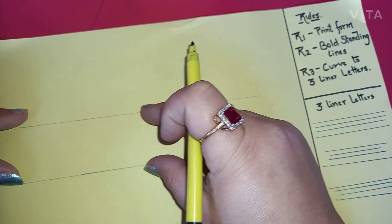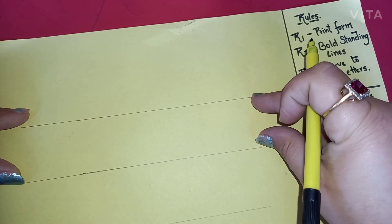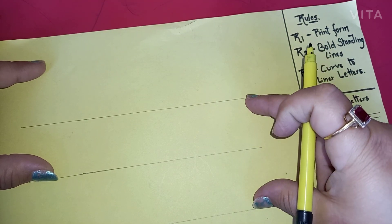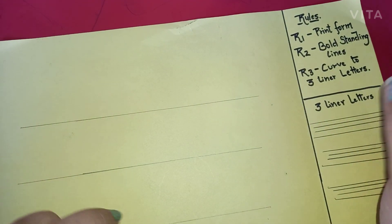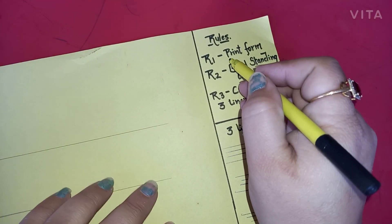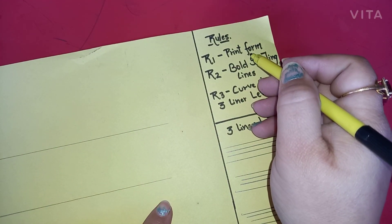First of all, just mark margin lines using a scale and a pencil. All your letters should be in between these two lines so that all letters should be equal. Now, rule number one: we are going to write in print form.